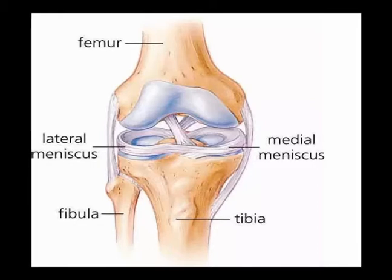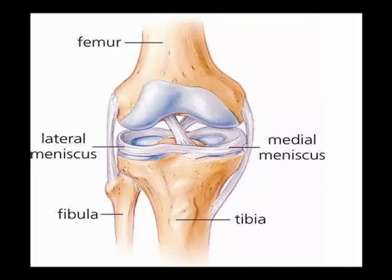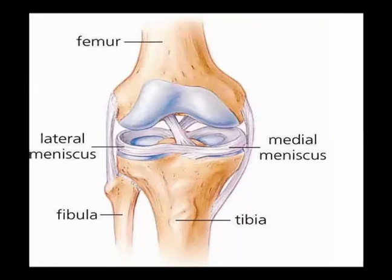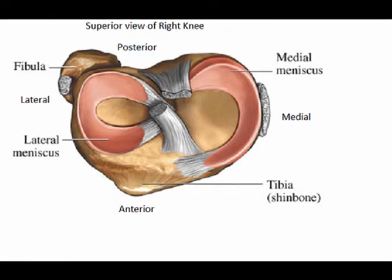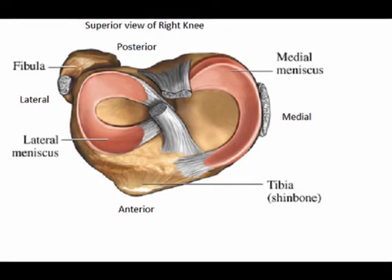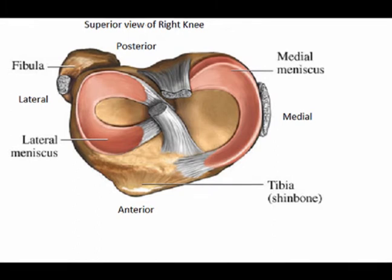The meniscus are located in the knee. They are cartilage that separates the femur and the tibia. There are two crescent-shaped discs in each knee, one located medially and one located laterally. When we have a superior view, looking down at the meniscus, the medial meniscus is C-shaped and the lateral meniscus is O-shaped.